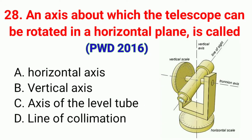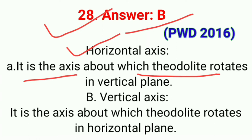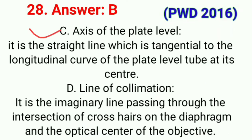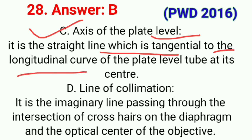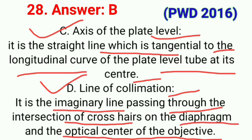Question number twenty-eight: The axis about which the telescope can be rotated in a horizontal plane is called. The correct answer is option B, vertical axis. The horizontal axis is the axis about which the theodolite rotates in a vertical plane. The vertical axis is the axis about which the theodolite rotates in the horizontal plane. The axis of the plate level is the straight line tangential to the longitudinal curve of the plate level tube at its center. The line of collimation is the imaginary line passing through the intersection of crosshairs on the diaphragm and the optical center of the objective.